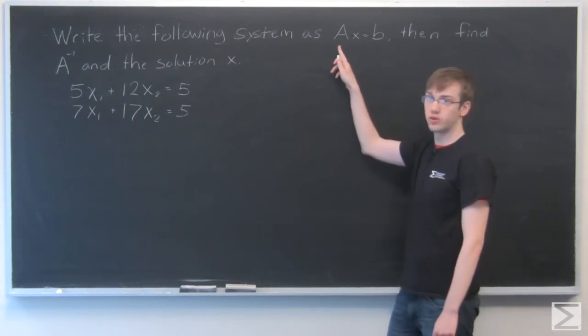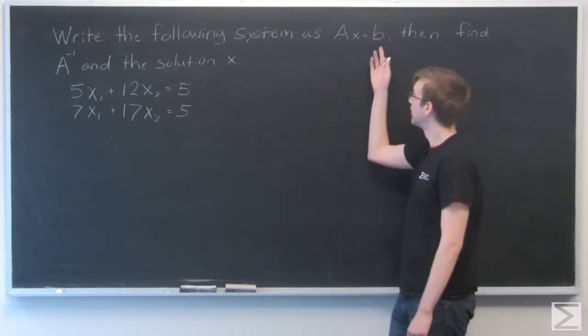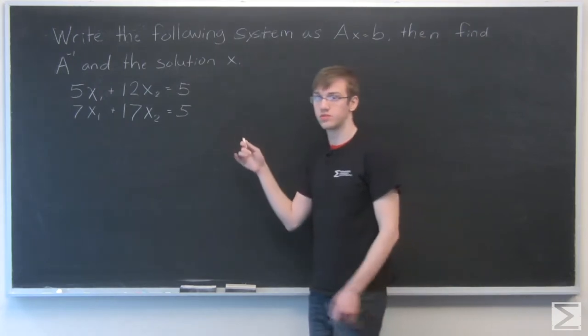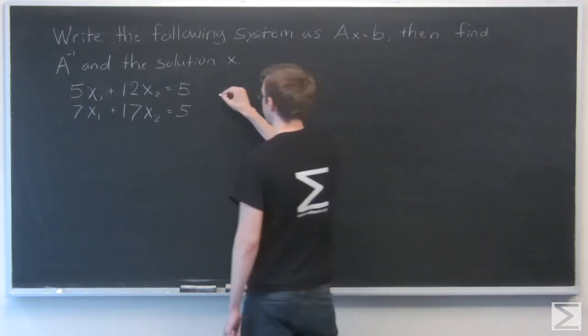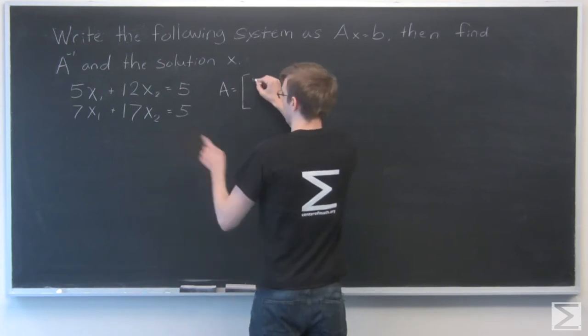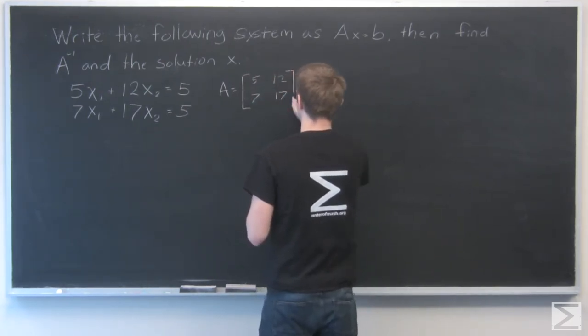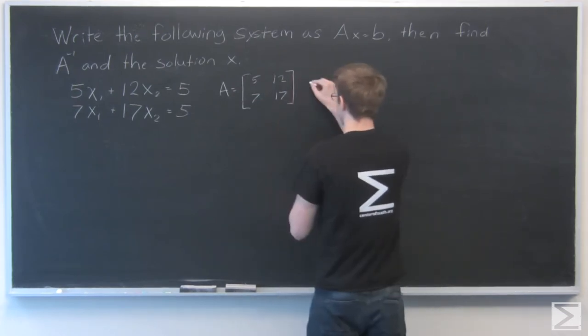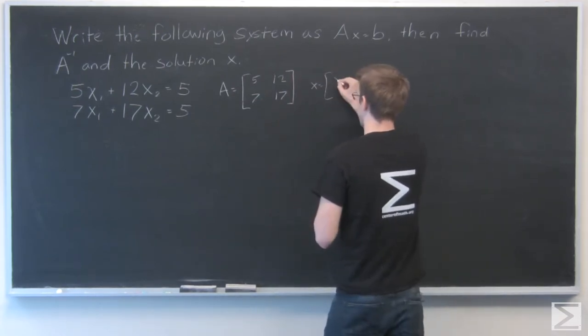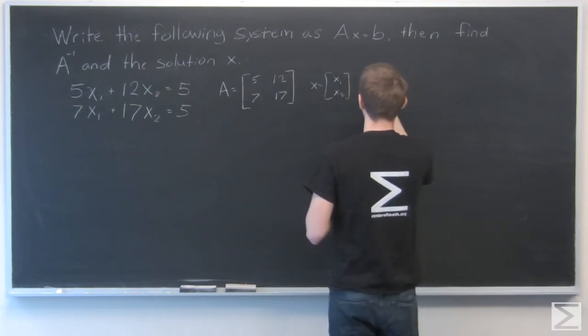In this formula, A is your coefficient matrix, X is the vector of X1 and X2, and B is your solutions. So the coefficient matrix A would be 5, 12, 7, and 17. X of course is just X1, X2, and B would be 5, 5.